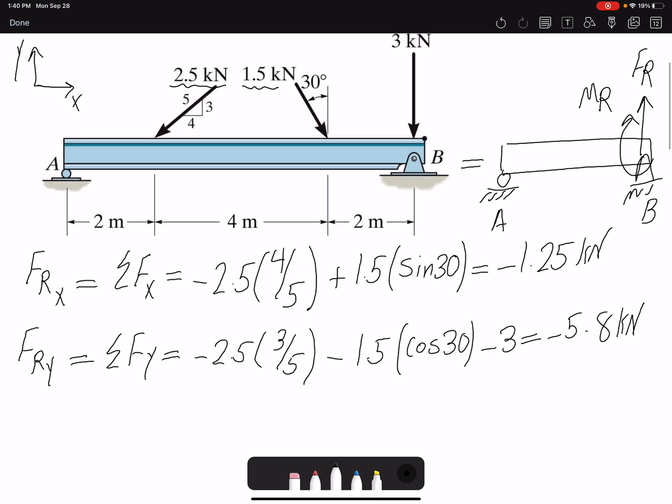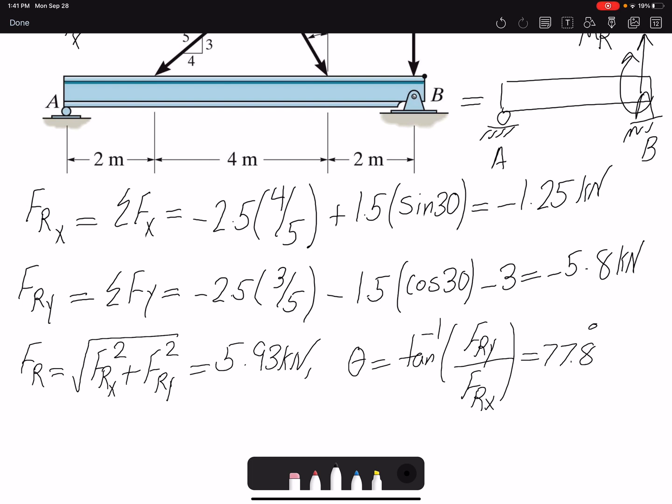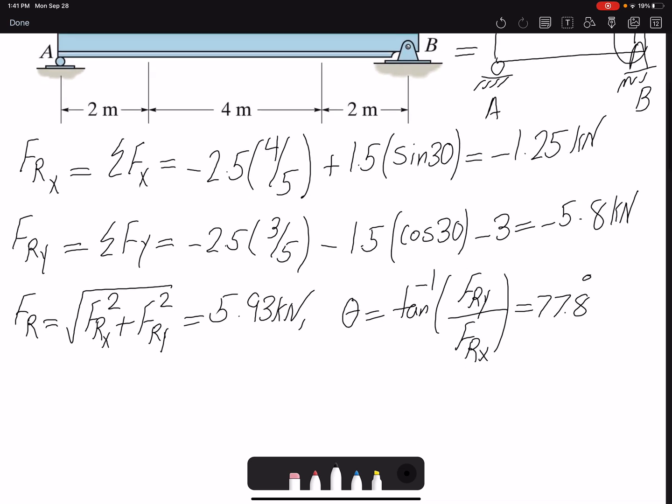So these are the summation of forces in x and y. If we want to find the resultant force, we use Pythagorean theorem to find the resultant force. So that would be F_Rx squared plus F_Ry squared. And then we get 5.93 kilonewton. If I want to find the angle, it would be tangent inverse of the F_Ry component over F_Rx component. Which will give me 77.8 degrees. But because these two values, both F_Ry and F_Rx, are negative, we know that our resultant force would be in the third quadrant.